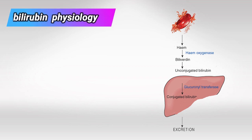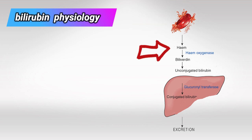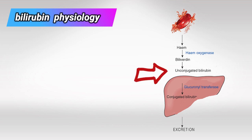First, let's understand what bilirubin is and what the normal pathway for bilirubin looks like. The first step is the lysis of RBCs. As we know, RBCs have hemoglobin which has heme, so when the RBCs lyse they release heme into the blood. Heme is broken down to biliverdin by the enzyme heme oxygenase, which is further broken down to unconjugated bilirubin, also called indirect bilirubin.